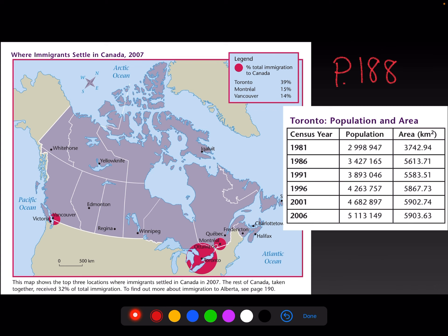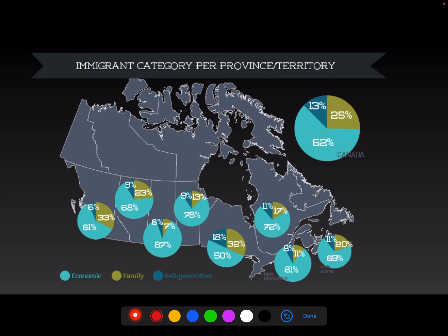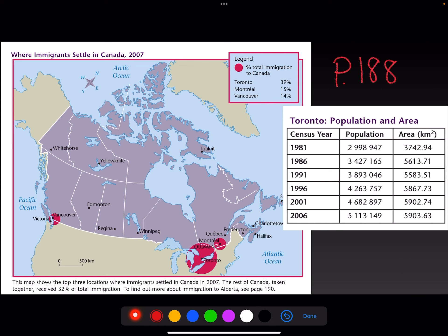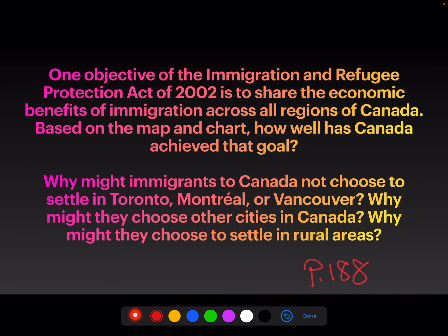That shows the Toronto population and area — just the fact of its sheer growth and size. As you go through, I want you to see where people are going and what they are doing. This chart doesn't show how many are going, just the kind of people going there, but it shows a lot of people going to British Columbia, Alberta, Ontario, and Quebec.